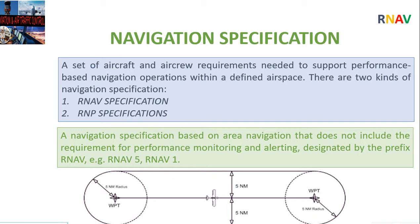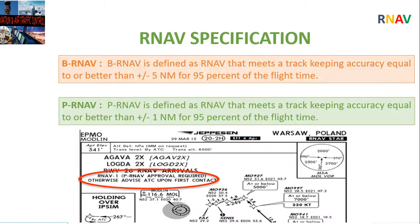Navigation specifications are requirements for aircraft and aircrew to support specific operations in defined airspace. There are two types: RNAV specifications and RNP specifications. Focusing on RNAV: an RNAV specification does not include the requirement for performance monitoring and alerting, and is designated by the prefix RNAV — for example, RNAV 5. RNAV 5, also known as Basic RNAV, is defined as area navigation meeting a track-keeping accuracy equal to or better than plus or minus 5 nautical miles for 95% of flight time. RNAV 1, also known as Precision RNAV, requires track-keeping accuracy equal to or better than plus or minus 1 nautical mile for 95% of flight time. Specific approval is required for these RNAV operations.